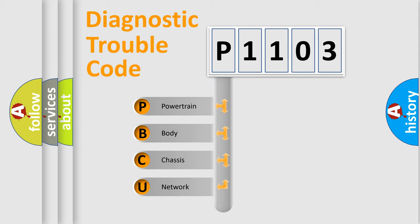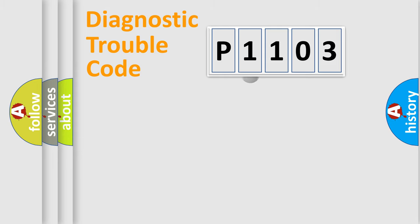We divide the electric system of the automobile into four basic units: Powertrain, Body, Chassis, and Network. This distribution is defined in the first character of the code.